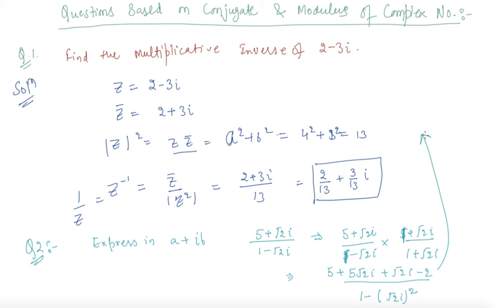So taking this here, I can directly say that it is 3 plus 6 root 2 i upon 3. So it is coming out to be 1 plus 2 root 2 i.